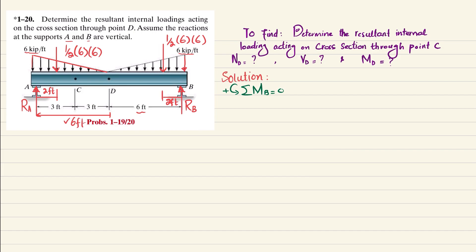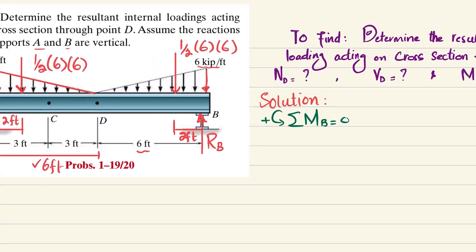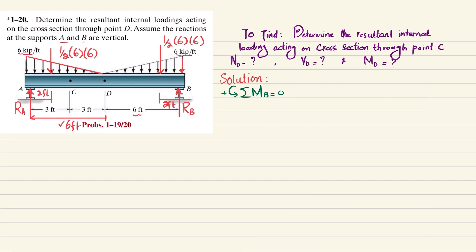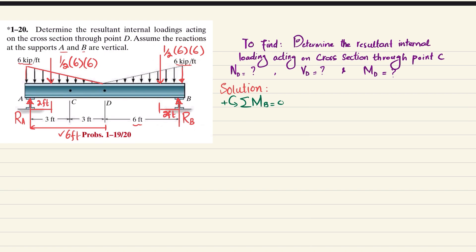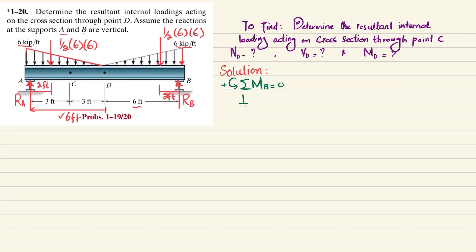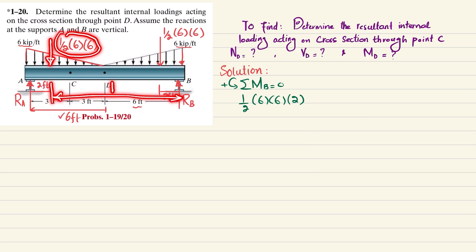The first moment about point B is due to the force 1/2 × 6 × 6, acting at 2 feet — this produces a counterclockwise moment, so it is positive. The second moment is due to the load 1/2 × 6 × 6, with a perpendicular distance of 10 feet.